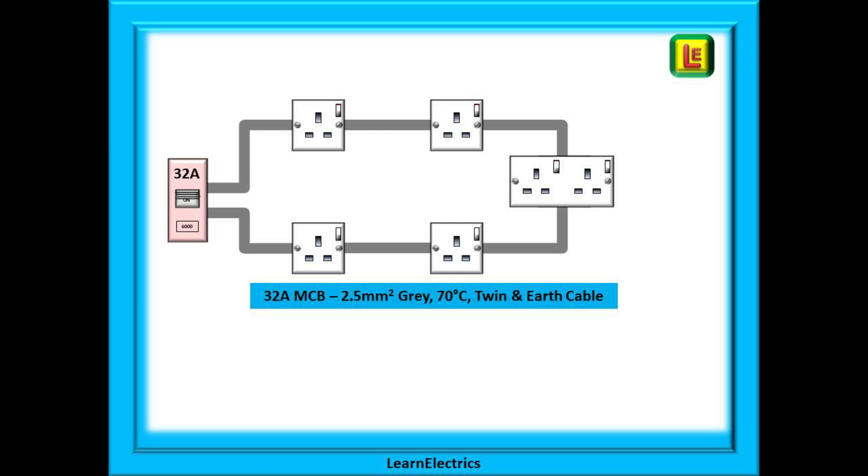This will be perfect for us to understand voltage drop and circuit length calculations in these circuits. We've included a double socket to visually mark the midpoint for our calculations today, but in reality any combination of singles and doubles is acceptable. We are going to keep things standard, so it is protected by the usual 32 amp circuit breaker and wired in 2.5 millimeter twin and earth cable.